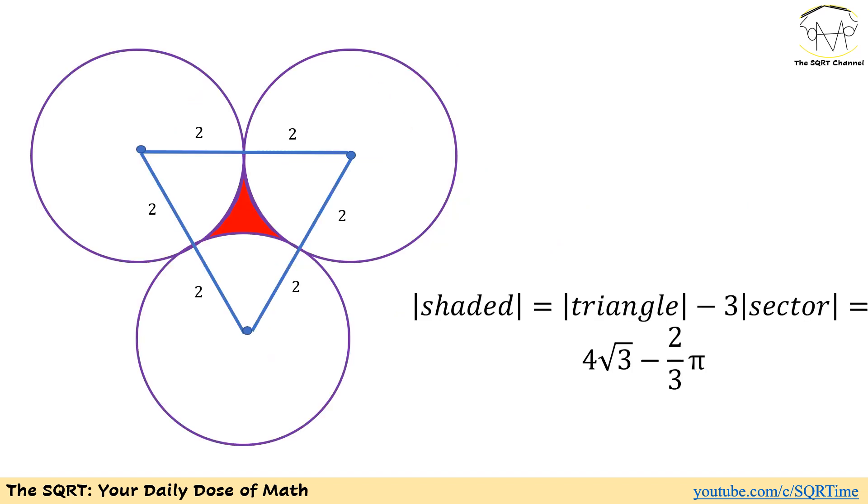Now that we know the area of the equilateral triangle and the sector, we can find the shaded region as the area of the triangle minus 3 times the area that we have for one sector. And the result is going to be 4 times radical 3 minus 2 times pi over 3. And that's our final answer.